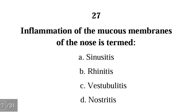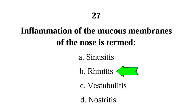Number 27. Inflammation of the mucous membranes of the nose is termed: A. sinusitis, B. rhinitis, C. vestibulitis, D. nostritis. The correct answer is B. Rhinitis is simply the inflammation of the mucous membranes of the nose.